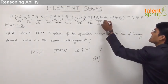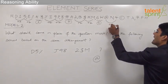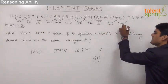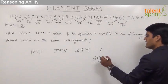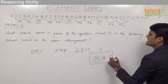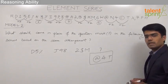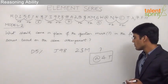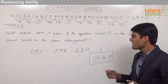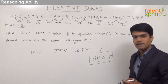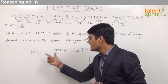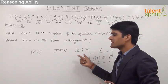Two positions away from @ we have 4, and again two positions away we have T. So the correct triplet is @4T. The answer for the given question is @4T. This is how you solve questions based on the missing triplet, simply by observing the positions of various elements in the given element series.